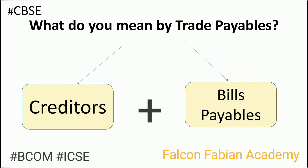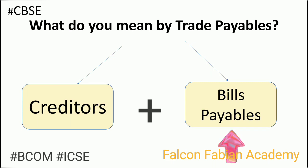I hope you're clear with the term creditor. Let's move on to the next term — bills payable. Bills payable means a bill of exchange accepted by a person or an enterprise, the amount of which will be paid on a specified date. A bill of exchange is a written order that binds a party to pay a fixed sum of money to another party at a specified date. In simple terms, bills payable can be understood as a written document that creates an obligation upon the person who buys on credit to make the payment on a specified date.